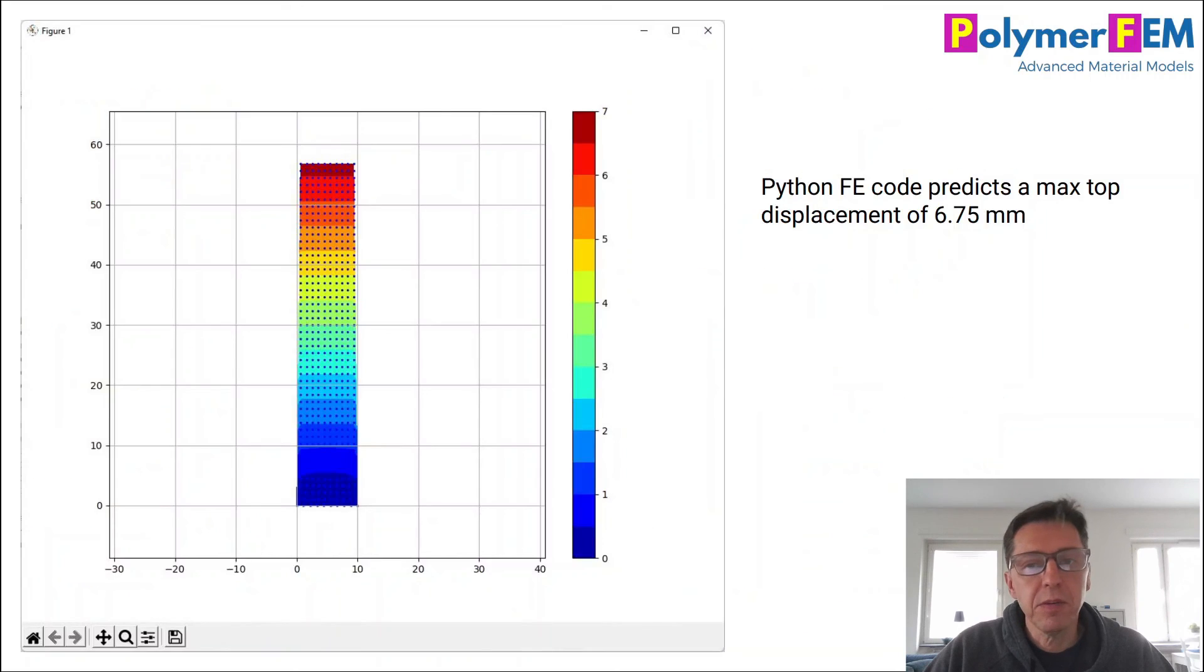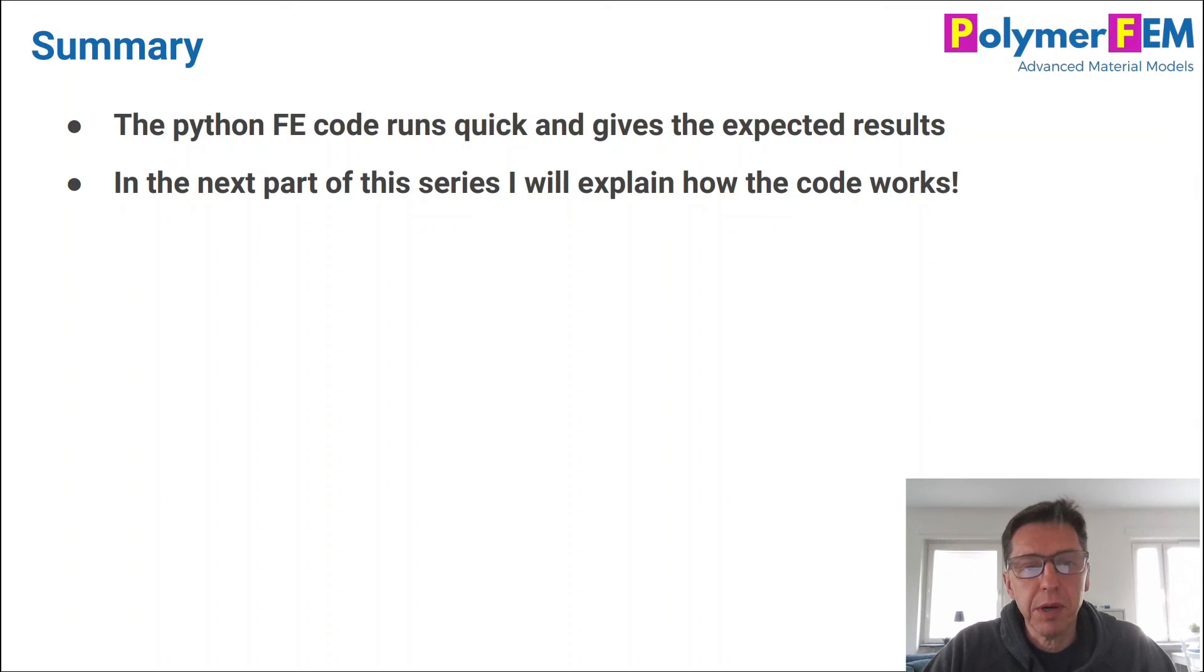So to finalize, it's easy to write this kind of Python code. It runs quick and it gives you the results that you expect. Really the key now is to try to understand what this code does. And that's what we'll do in the next set in this series. If you have any questions, you can ask them below.